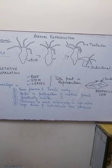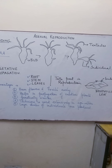Our topic today is asexual reproduction, and we will be talking about a few other methods of asexual reproduction. Another important method by which reproduction is brought about is budding. There are various organisms which undergo the process of budding or the formation of a bud. In this method, the mature organism starts developing an outgrowth, and this outgrowth is known as a bud.